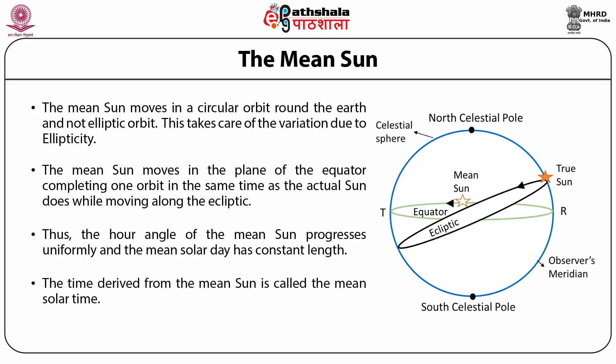The time derived from the mean sun is called the mean solar time. The time interval between successive transits of the mean sun over the same meridian is defined as the mean solar day. By international agreement, the time of the Greenwich meridian is called Greenwich Mean Time. This can be related to the mean time of any other place through the longitude of that place. This mean solar time is the time which is shown in our clocks and watches.